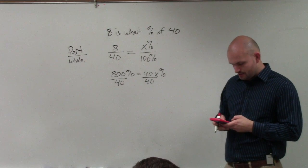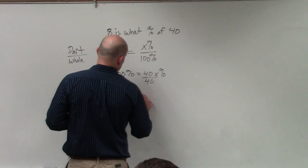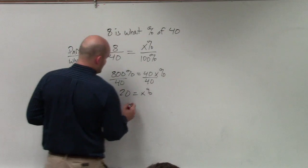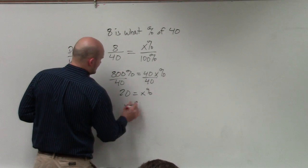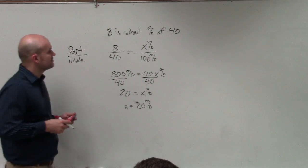And then we do 800 divided by 40, and you get 20 equals x percent. So therefore, x, you could say, is 20%. So 8 is 20% of 40.